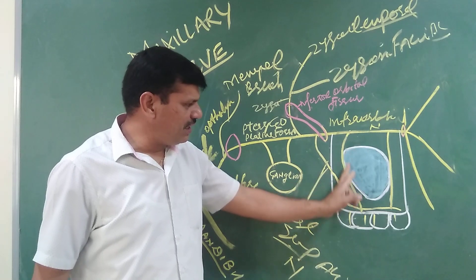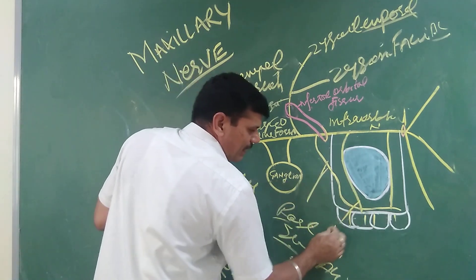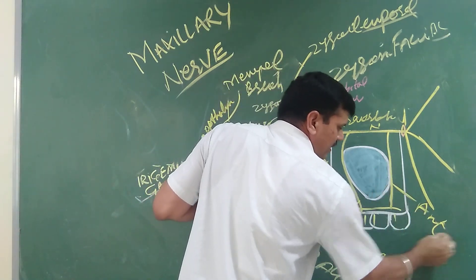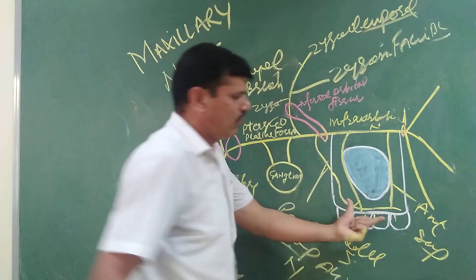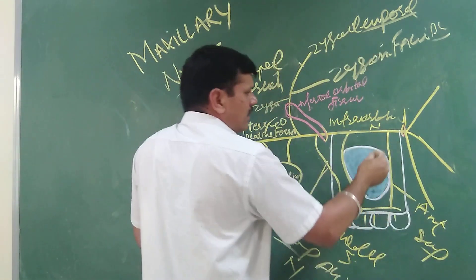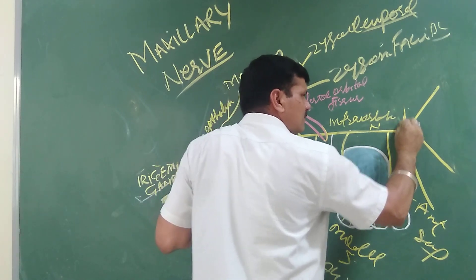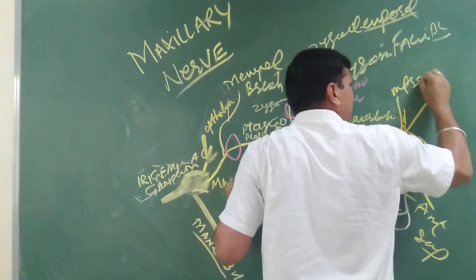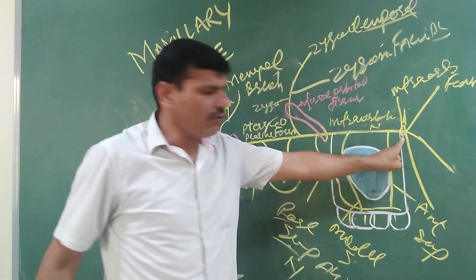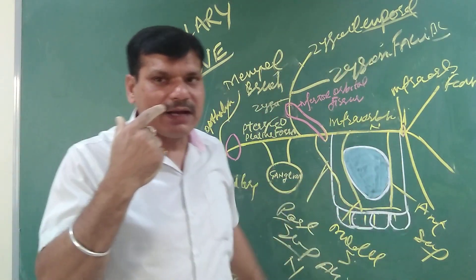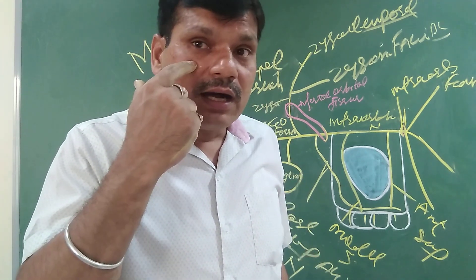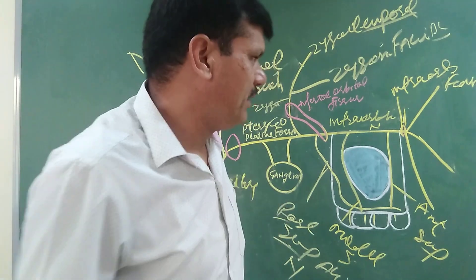Here in the floor of the orbit, the infraorbital nerve gives additional branches: one is the middle superior alveolar and another is the anterior superior alveolar branch to the upper jaw. Then it passes through the infraorbital foramen, from where it gives three branches: one is palpebral to the eyelid, another is nasal, and the third is labial.